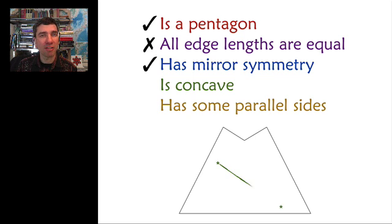Is it concave? Now, your students might not know what concave and convex are. Concave means that it's possible to find two points in your polygon such that the line that joins them is not all within the polygon. So there's an example of a line that shows that this polygon is concave. If you can't find a line like that, then you'd call it convex. So it is concave.